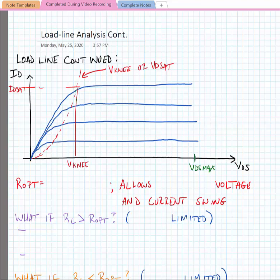So our optimum resistance load line is given to us as V_DS_max minus V_knee over I_D_sat.